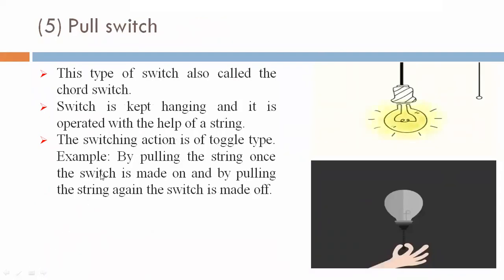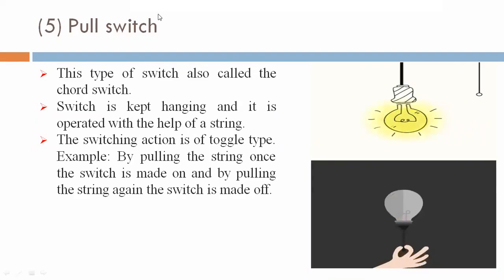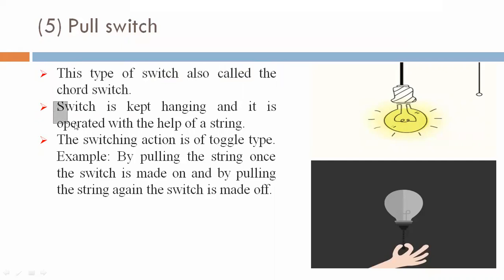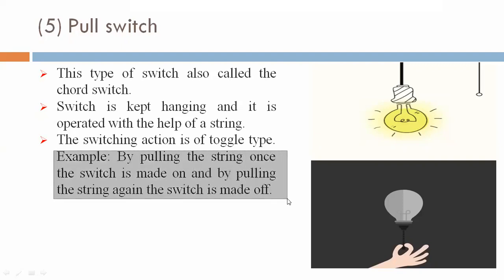Fifth type: pull switch, also called the cord switch. The switch is kept hanging and is operated with the help of a string. The switching action is of toggle type — by pulling the string once, the switch is made on, and by pulling the string again, the switch is made off.